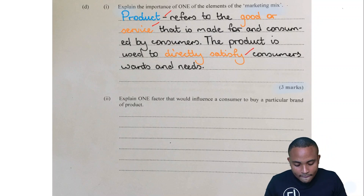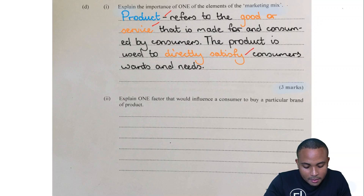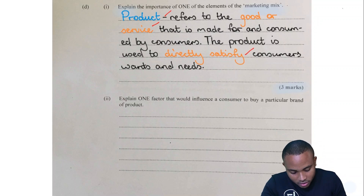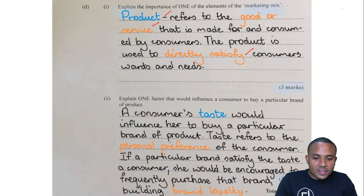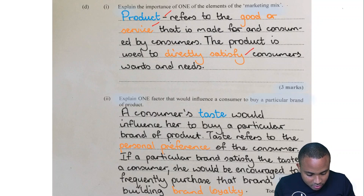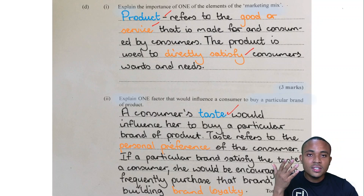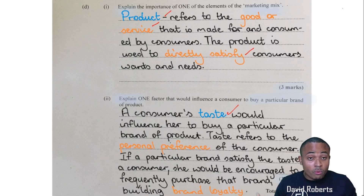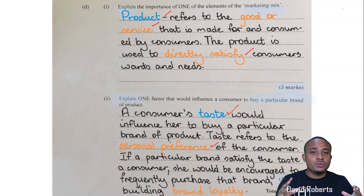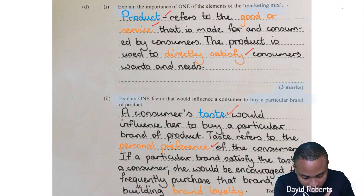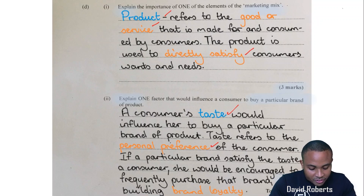Part two: explain one factor that would influence a consumer to buy a particular brand of product. A consumer's taste would be such a factor. Taste refers to the personal preference of the consumer. If a particular brand satisfies the taste of a consumer, she would be encouraged to frequently purchase that brand, which builds brand loyalty.